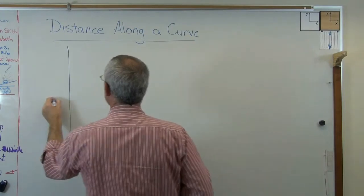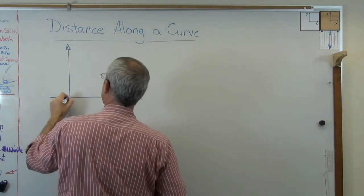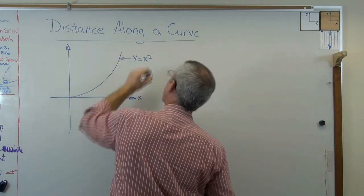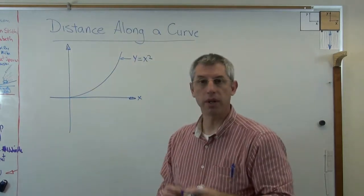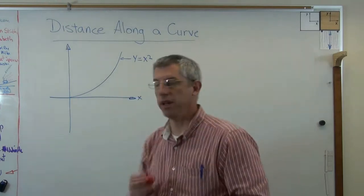Let's say I've got an object that's moving on a path here. Let's make the path a really simple one. Let's make it a parabola. So y equals x squared. So what I've got now is an object traveling along this path. This might be my object right here. I've got an egg.